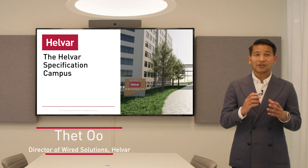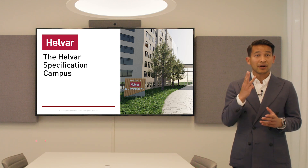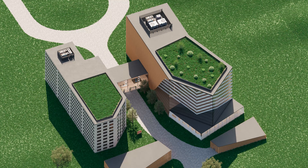Our example campus consists of three parts. The first is the older existing building, second is the newer building, and third is the beautiful atrium that connects the two.